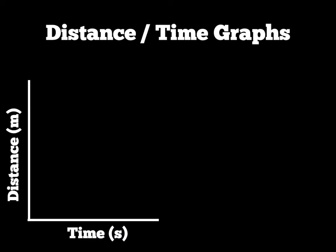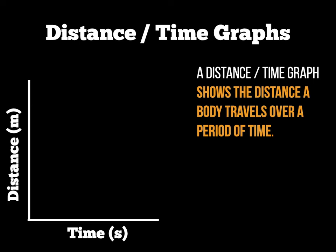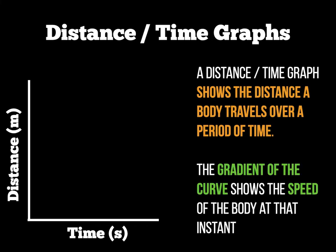Let's start with distance-time graphs. A distance-time graph shows the distance covered by a body — an object or a person — travelling over a period of time. The gradient that the curve shows tells us the speed of that body at that particular instant.